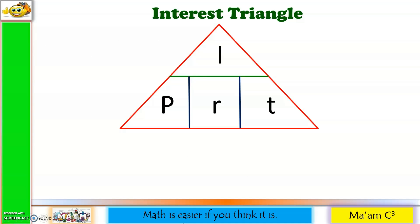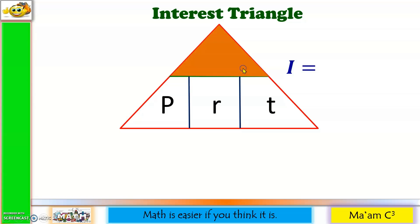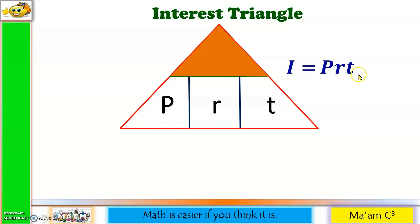Here is the interest triangle. We have I, P, R, and T. Suppose I want to solve for I — let me cover I — and I have P, R, T. Therefore, I is equal to PRT. Interest equals the principal amount times the rate times the time.